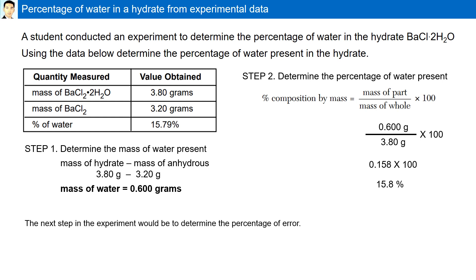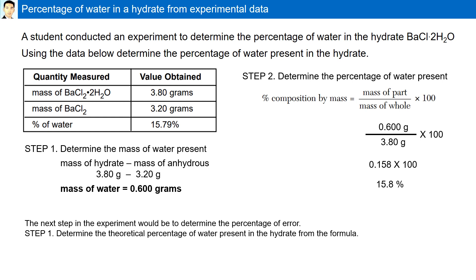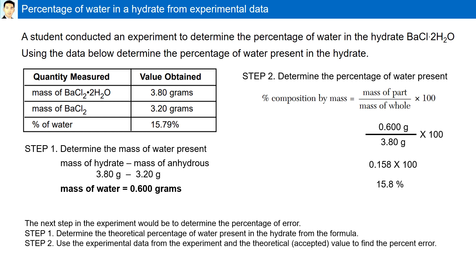The next step in this type of question would be to determine the percentage of error in the experiment. Here, we would determine the theoretical percentage of water present in the hydrate from its formula — like the previous question — and then use the data from the experiment and the calculation to determine the percent error.